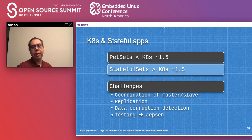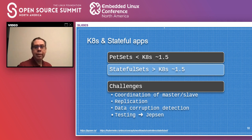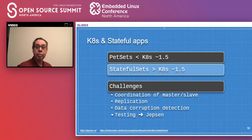Some challenges still remain: you need to handle replication across different nodes, avoid data corruption when a container goes down and comes back up on a different Kubernetes node, and manage crash recovery. Testing for stateful applications is also quite a challenge — there's a nice open source tool called Jepsen that helps with that, but it's still pretty challenging.